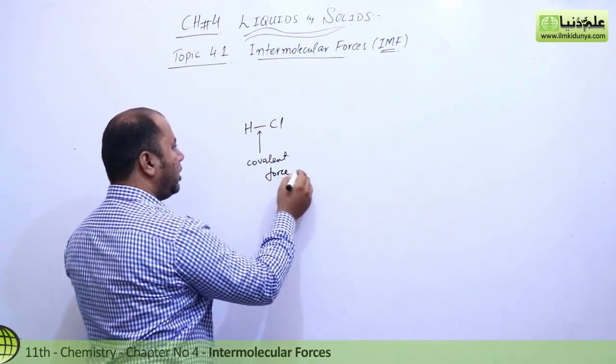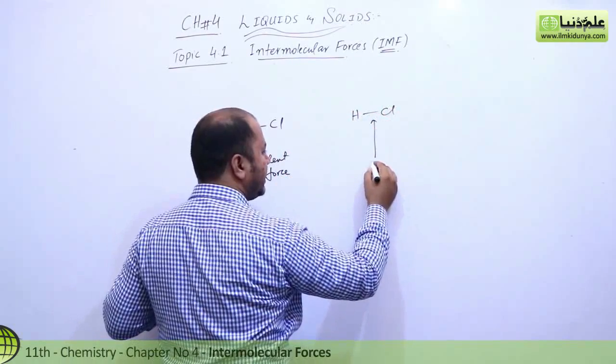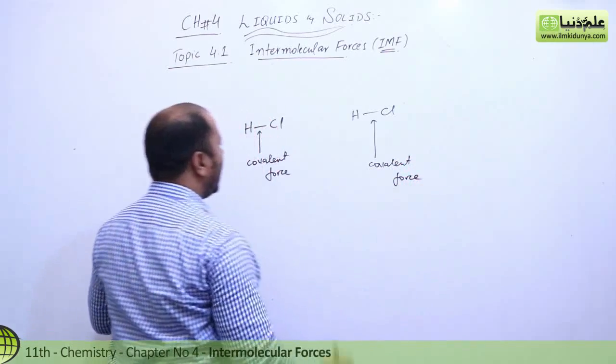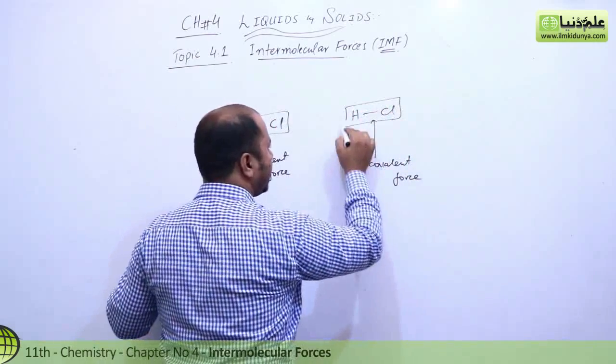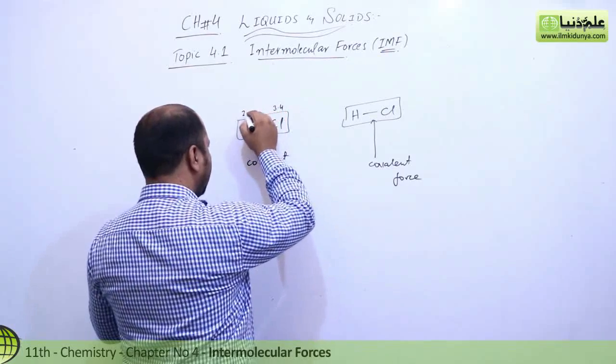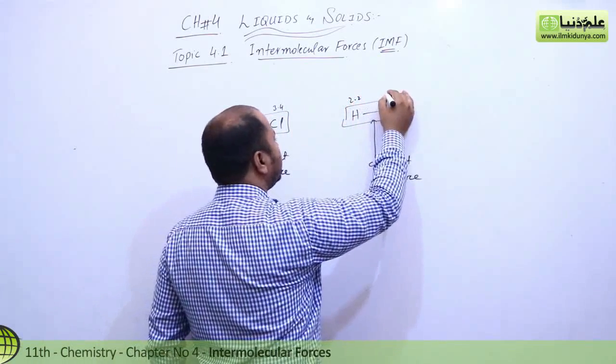Students, let me explain what I can tell you about this. For example, this HCl molecule, right? Now the force you see here is a covalent force. Okay? And here you can see another one, and in this one you also see a force which is covalent force. Now you know about electronegativities, so chlorine is about 3.4 electronegativity and hydrogen is 2.2 electronegativity. Same is the case over here.